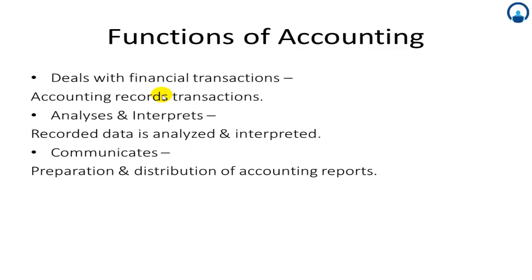After recording, classifying, and summarizing, the fourth step is dealing with financial transactions. As the name suggests, accounting records only transactions of a financial character — only financial transactions are recorded. Once that is done, the fifth step which comes into the picture is analysis and interpretation. The data has been recorded, classified, and summarized, and now only the financial transactions are taken into consideration for analysis.